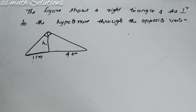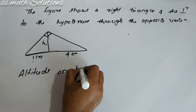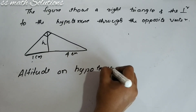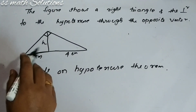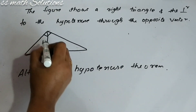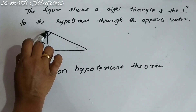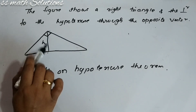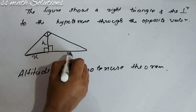When you get a problem like this, we can apply the altitude on hypotenuse theorem. In a right triangle with hypotenuse H, when we draw a perpendicular from the right angle vertex to the hypotenuse, it creates two smaller right triangles. If the two segments of the hypotenuse are X and Y, and the altitude is H, we label the vertices A, B, C accordingly.